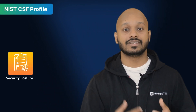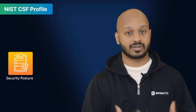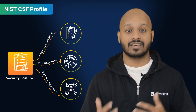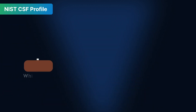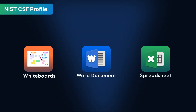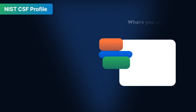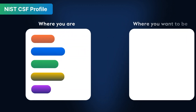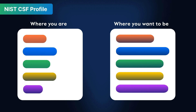Framework profiles refer to the alignment of your security posture with business requirements, risk tolerance, and the resources of the organization. This can take several forms — whiteboards, word documents, Excel spreadsheets, etc. But at its crux, the CSF is you understanding where you are versus where you want to be. There are two basic profiles that NIST CSF talks about: current profile and target profile.